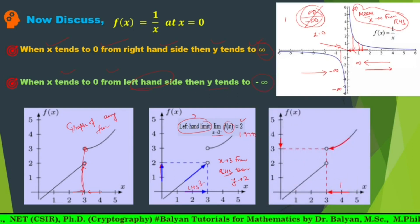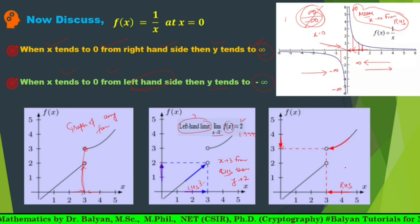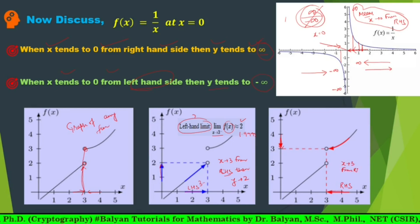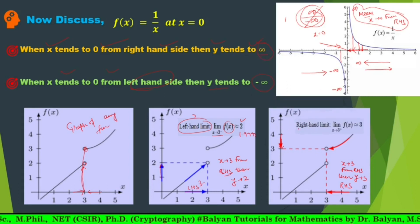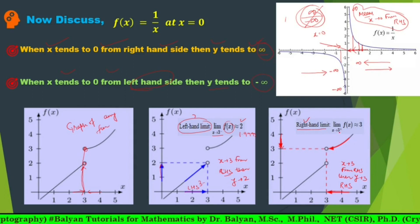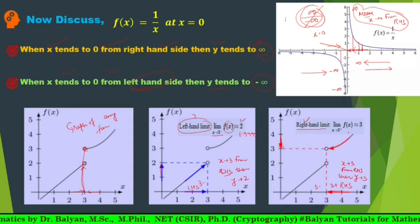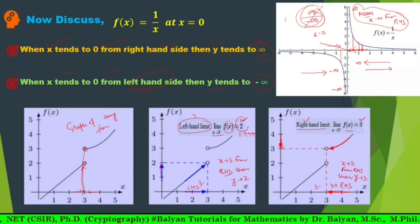When we approach from the right-hand side, going toward 3, x tends to 3 from the right-hand side, then y tends to 3. We can call this the right-hand limit. When x tends to 3 plus, f(x) tends to 3. So we have 3 plus and 3 minus. But you can see that both limits are different: the left-hand limit is 2, and the right-hand limit is 3.